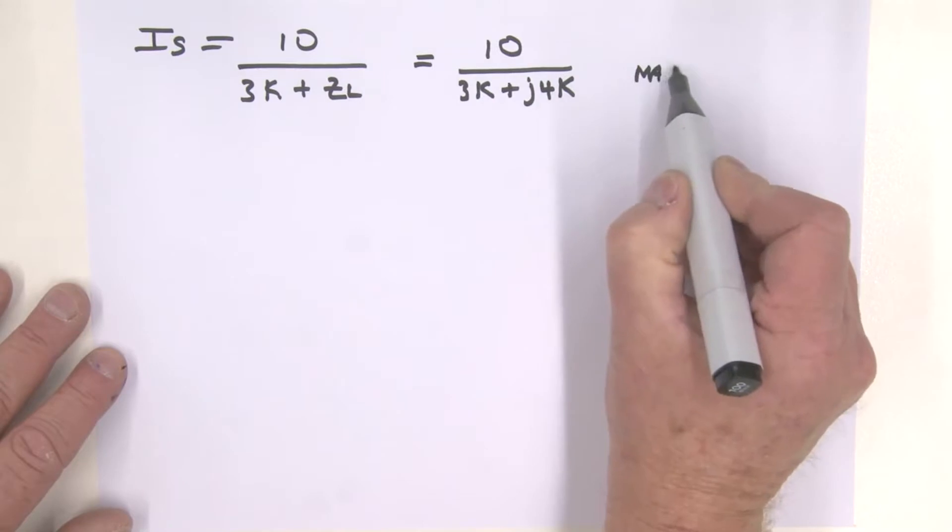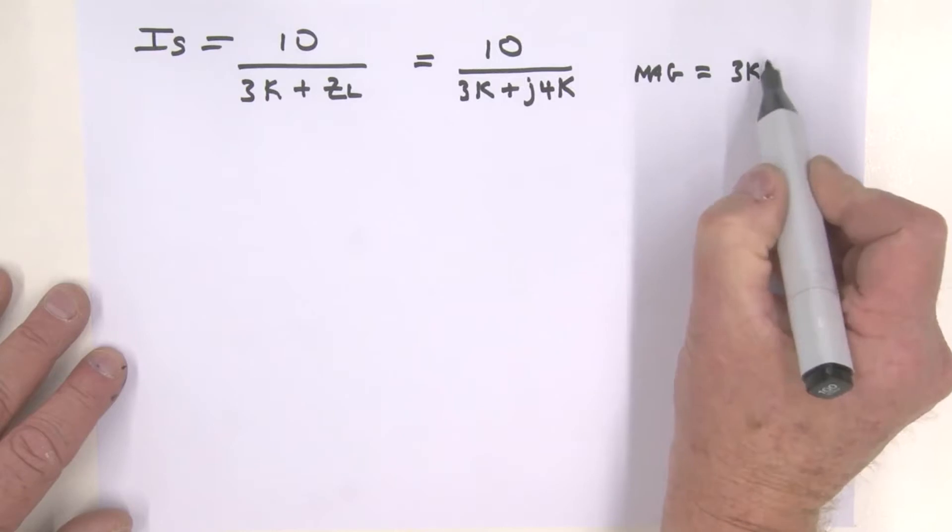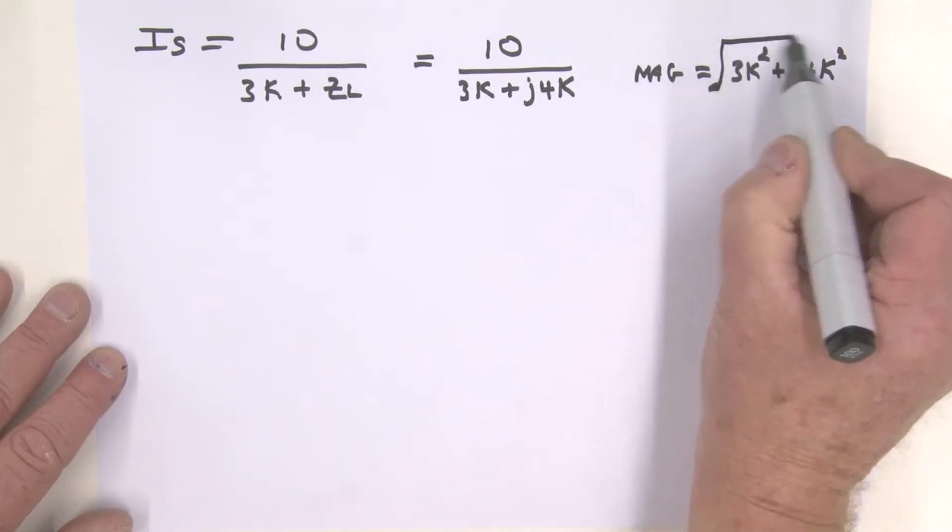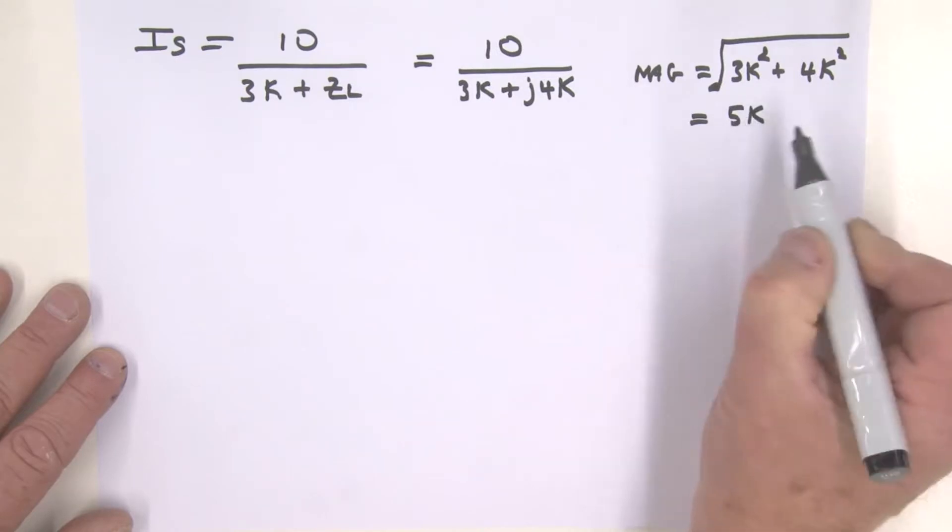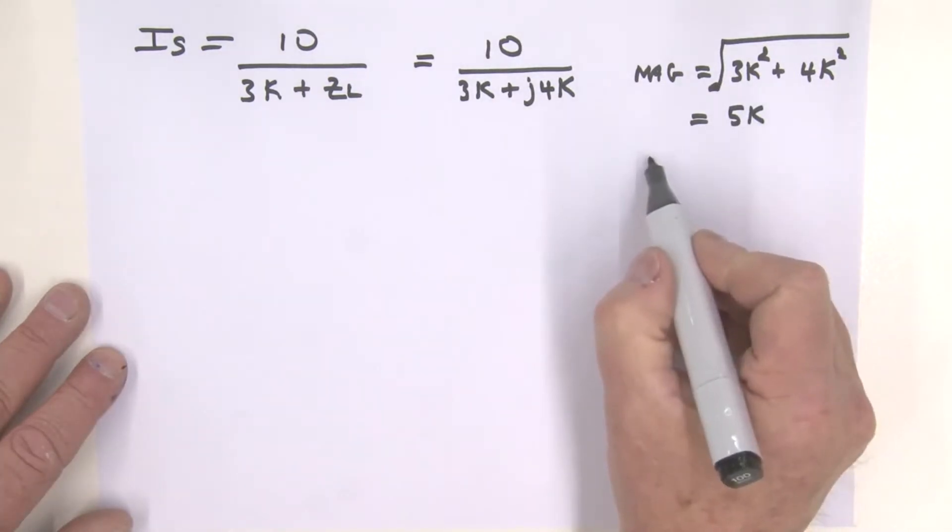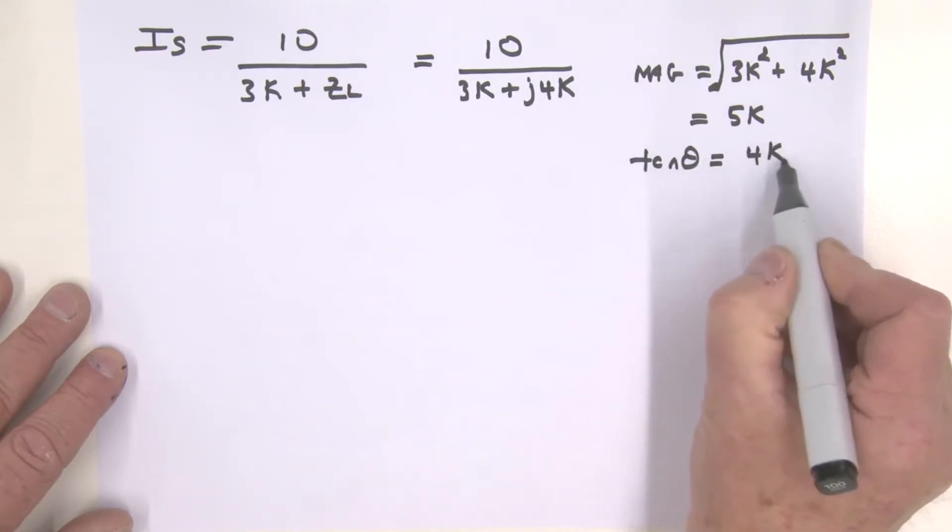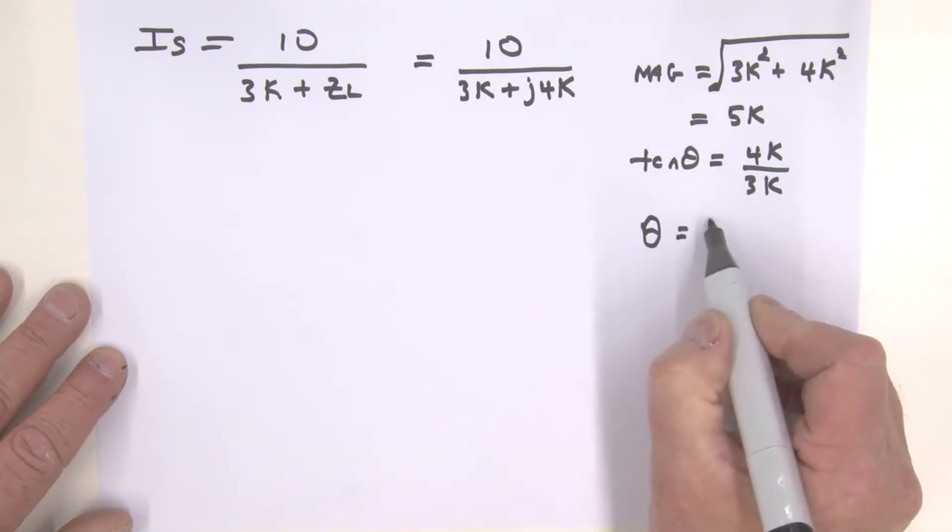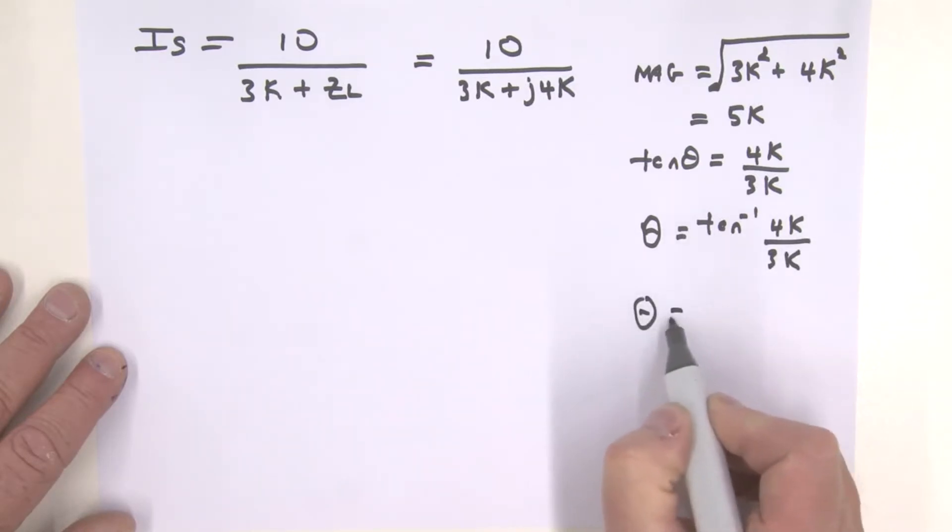We did that last time, but once again we can quickly do that. The magnitude is simply equal to 3K squared plus 4K squared, and then we take the square root of it, so that magnitude is equal to 5K. The angle is really tan theta being equal to the 4K divided by the 3K. So therefore theta is going to be equal to the inverse tangent of that 4K over the 3K, which gives me a theta that is equal to 53.13 degrees.